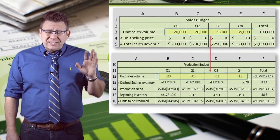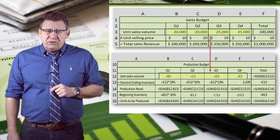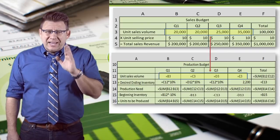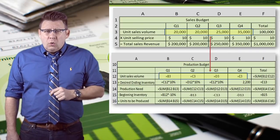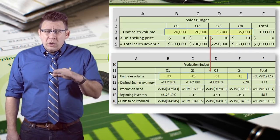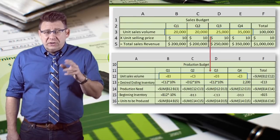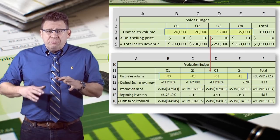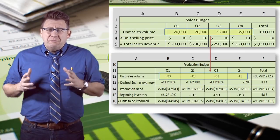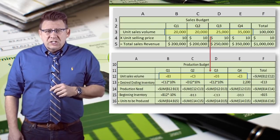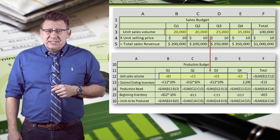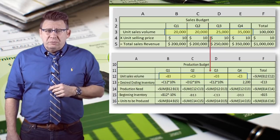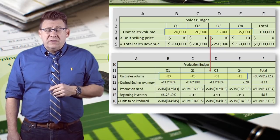Here we have both the sales budget and the production budget. We start by linking the two budgets together — I can't emphasize how important this is. Once the budgets are built, we might want to change sales volume and do a little what-if scenario analysis. What a pain it would be if we had to go into every budget and make changes. So when budgets are linked together, the analysis is a snap. I've linked the sales in the production budget to the sales volume in the sales budget.